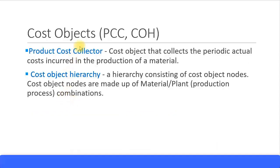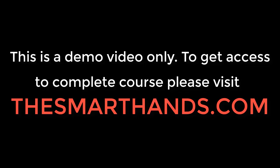Now let's look at the two cost objects for product cost by period. The first one is the product cost collector. Just looking at the word itself — it collects the cost. This is a cost object that collects the cost on a periodic basis for actual costs.